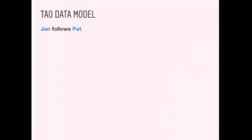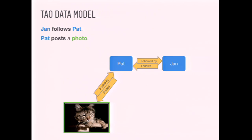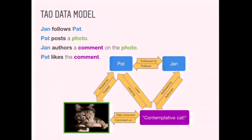TAO's data model is a graph store. For a typical Instagram case — Jan follows Pat — we have two nodes with edges for 'follows' and 'followed by.' Pat posts a photo: another node, with edges 'posted by' and 'posted.' A comment is another node, a few more edges, and a like adds a couple more edges. The operations exposed by TAO, as is typical with large-scale data stores, are very few — you can get a node by ID, get a range of nodes by creation timestamp, get all outgoing edges from a node, and get edges between any two given nodes.